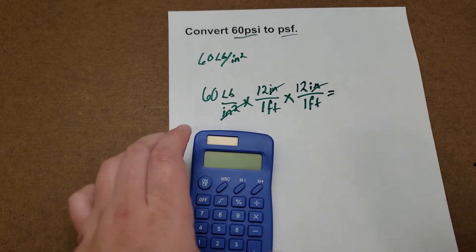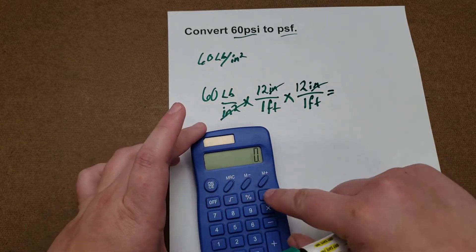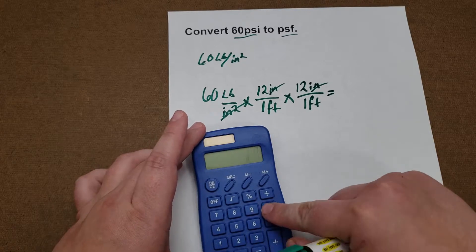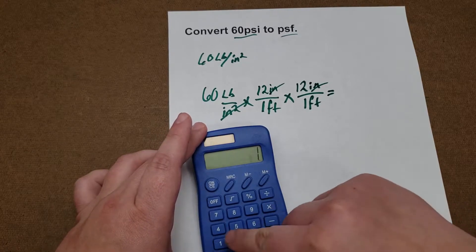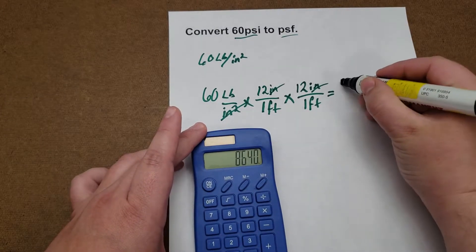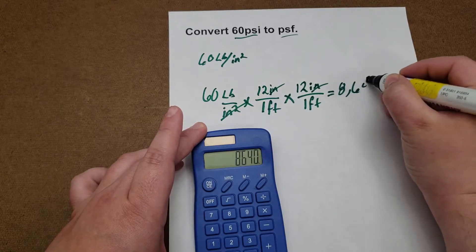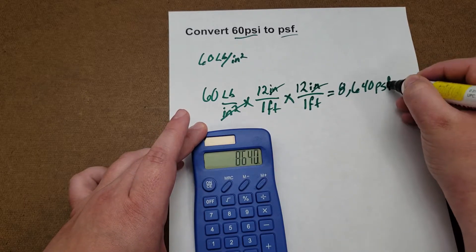So, 60 times 12 times 12 gives you 8,640 PSF.